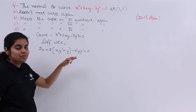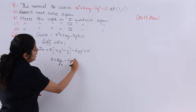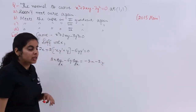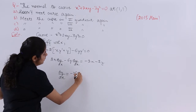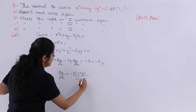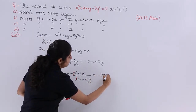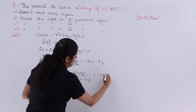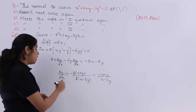Now let's find the value of dy/dx. Rearranging: 2x·(dy/dx) − 6y·(dy/dx) = −2x − 2y. Taking dy/dx common and simplifying: dy/dx = (−2x − 2y) / (2x − 6y), which simplifies to dy/dx = (−x + y) / (x − 3y).